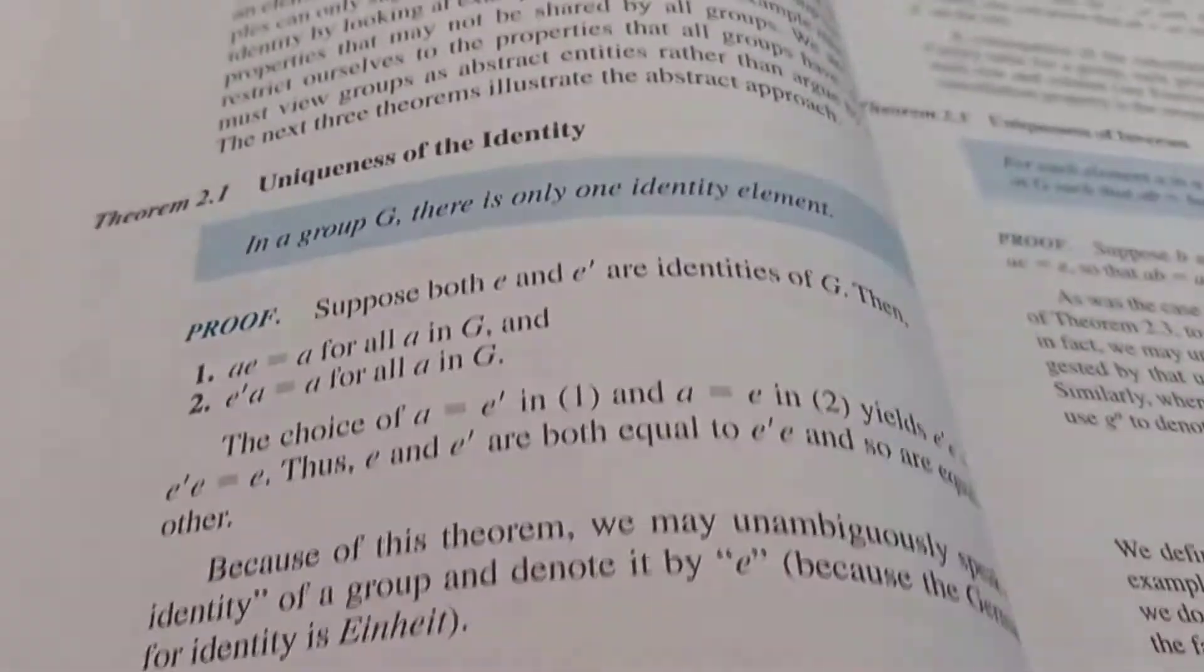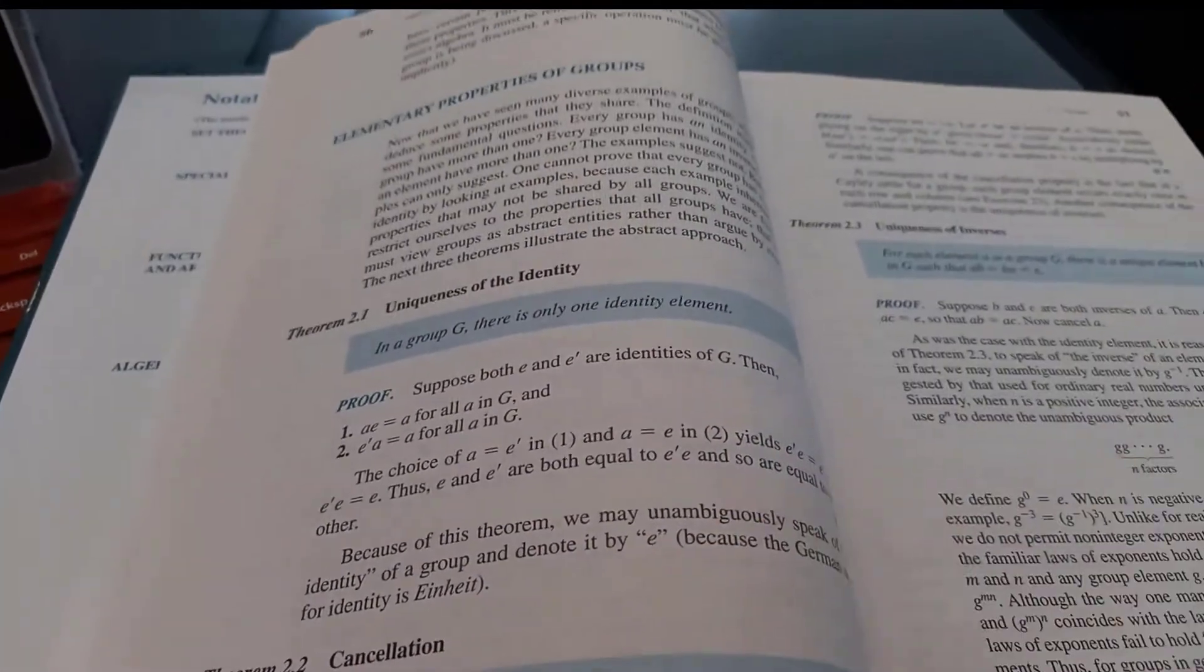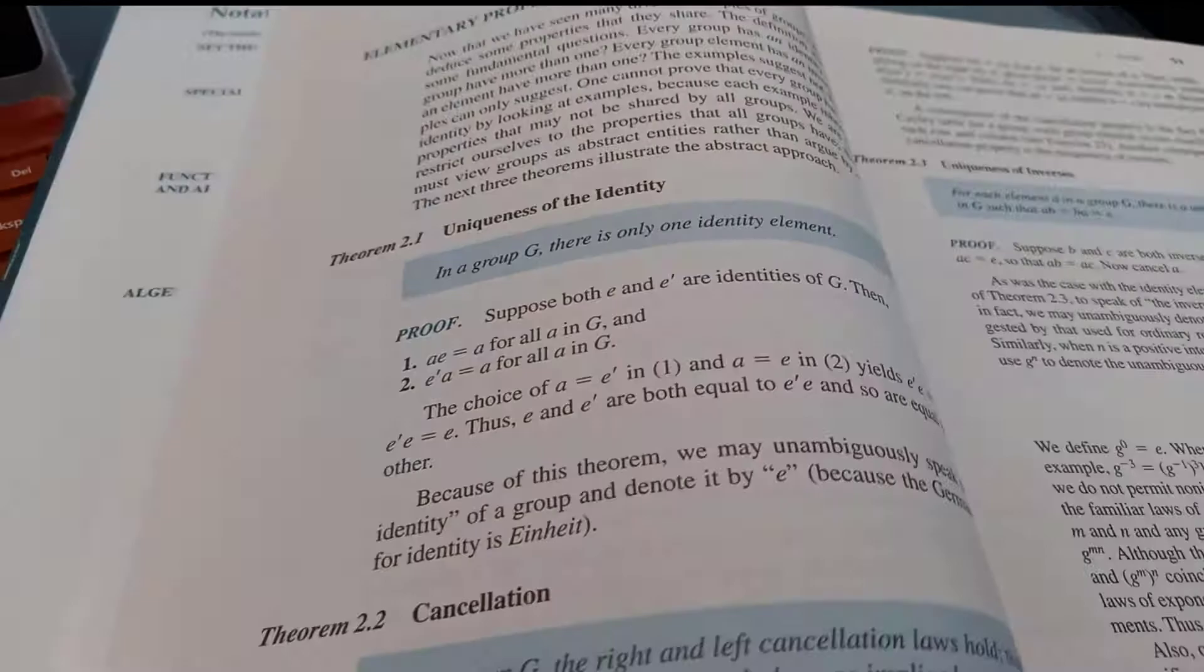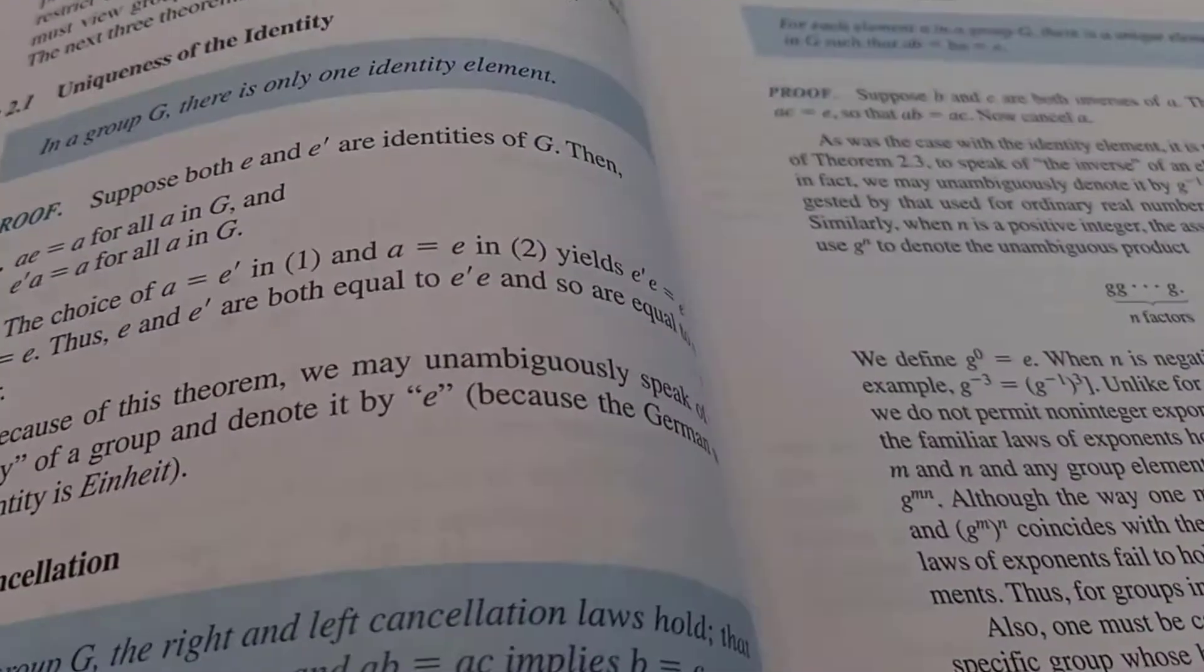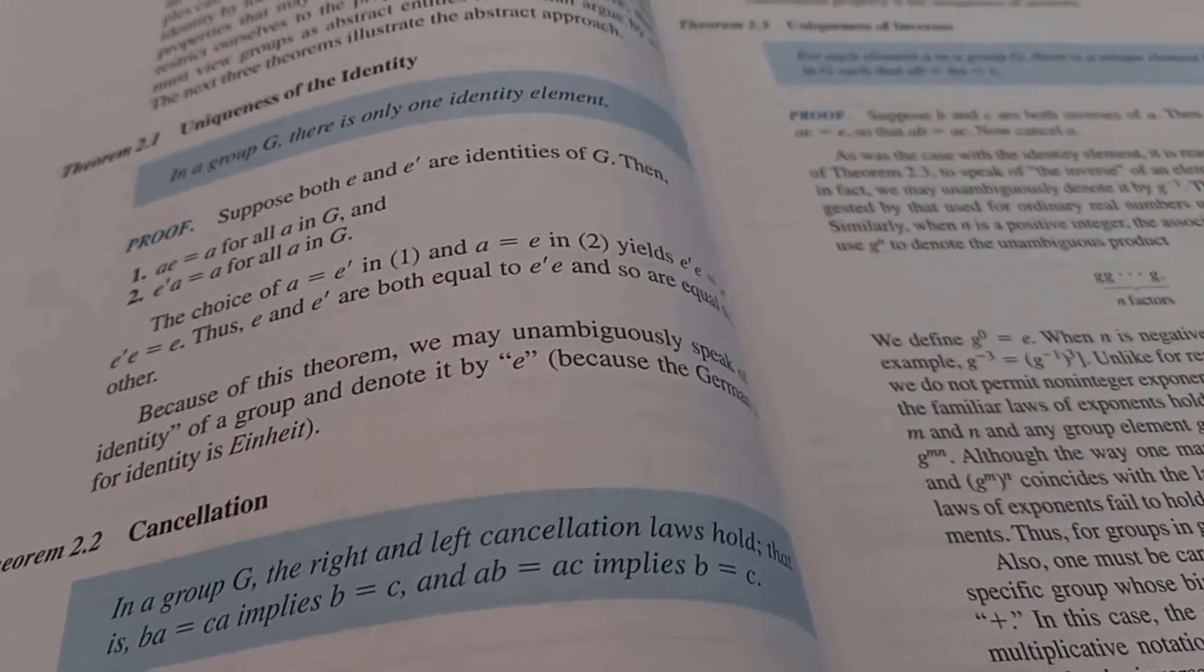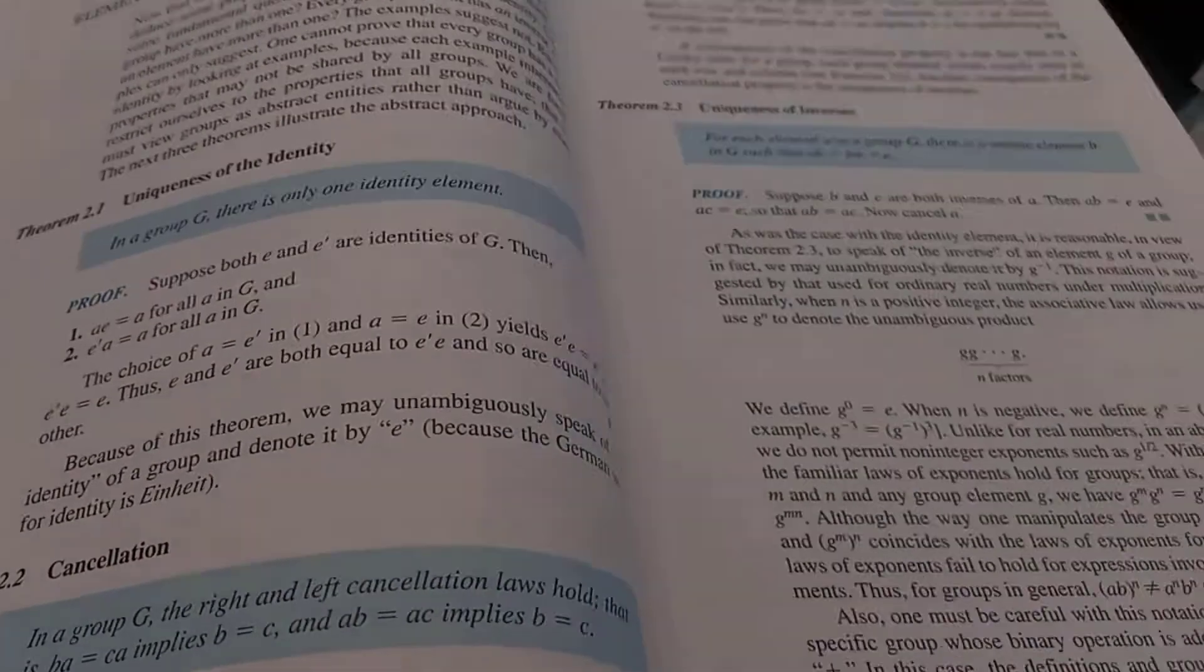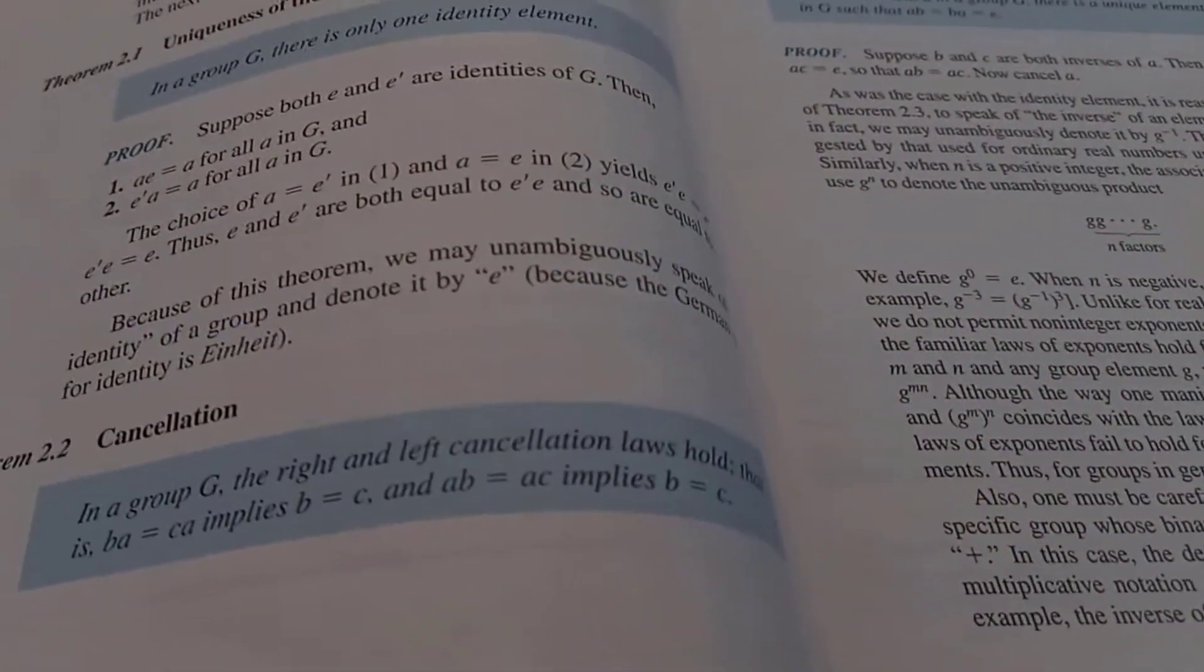Write down something. Write down something about it. Something other than the statement of the theorem. So when you develop a habit like this one, every time I see an example, I will write such and such. Every time I see a theorem, I will write such and such. You will have a much, much better understanding of anything you study in abstract algebra. And that's all I have for now. So hopefully this has been beneficial.